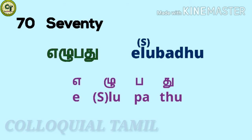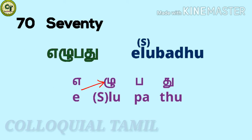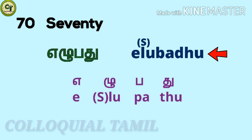For 70: a short vowel; two short vowel letters; together: 70.